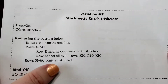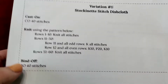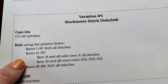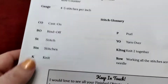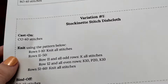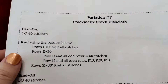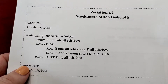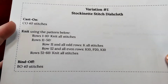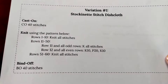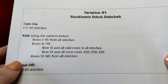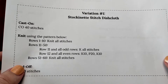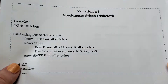Rows 51 to 60 we are going to knit all stitches. Then our last step says BO 40 stitches — bind off — and I already know how to do that. So the only thing you don't know how to do for the stockinette stitch dishcloth is the purl stitch, and I'm going to show you that in this video so that you can make a variation of the dishcloth you've already made.